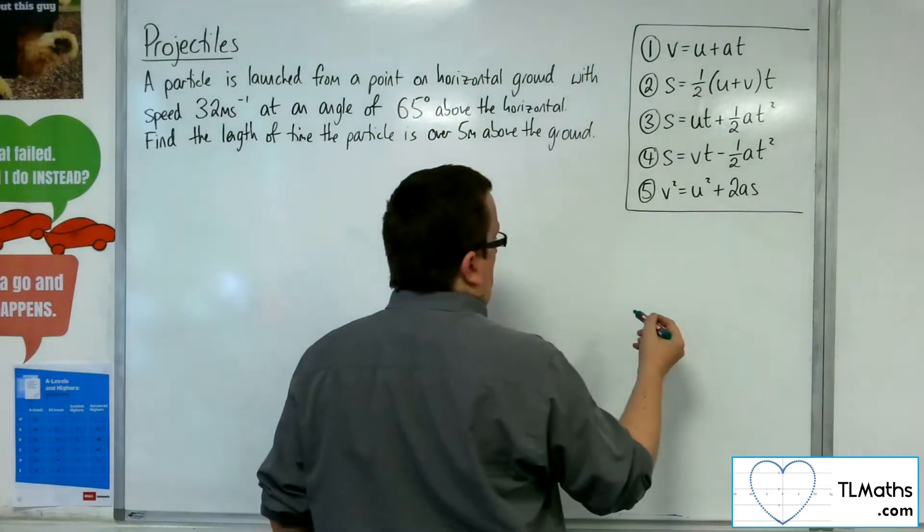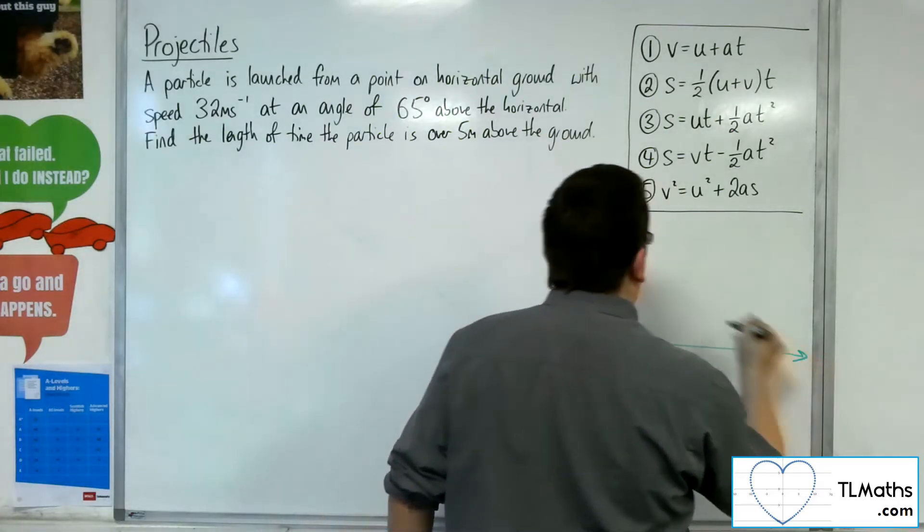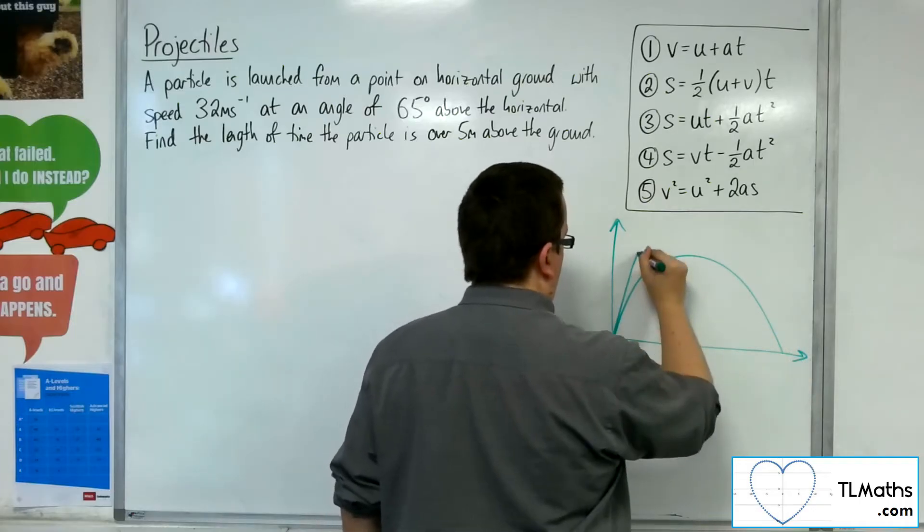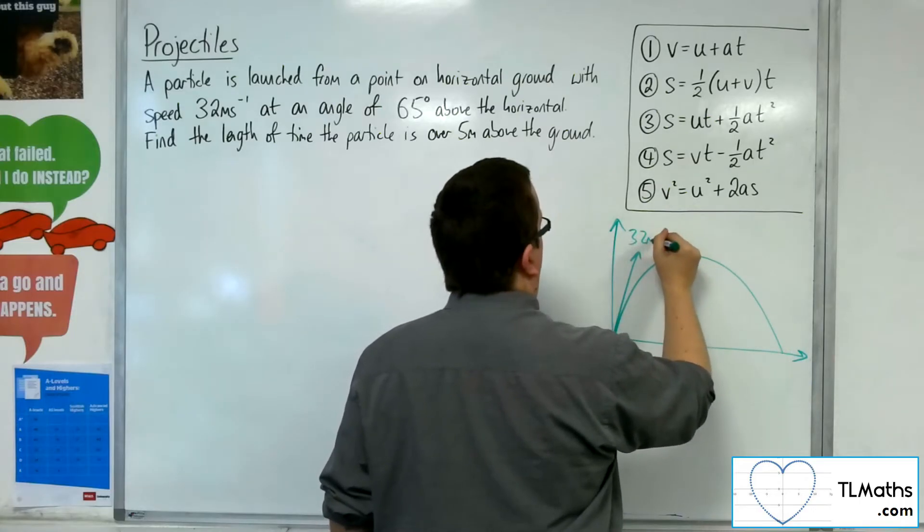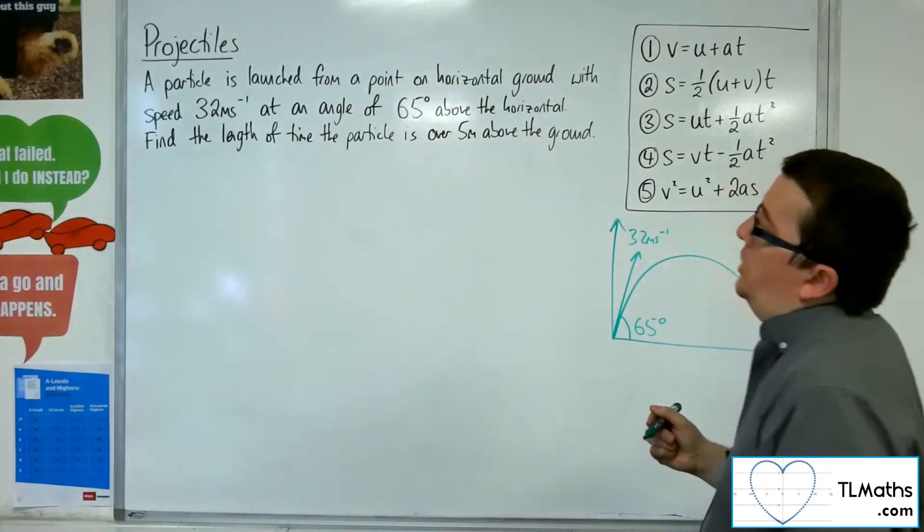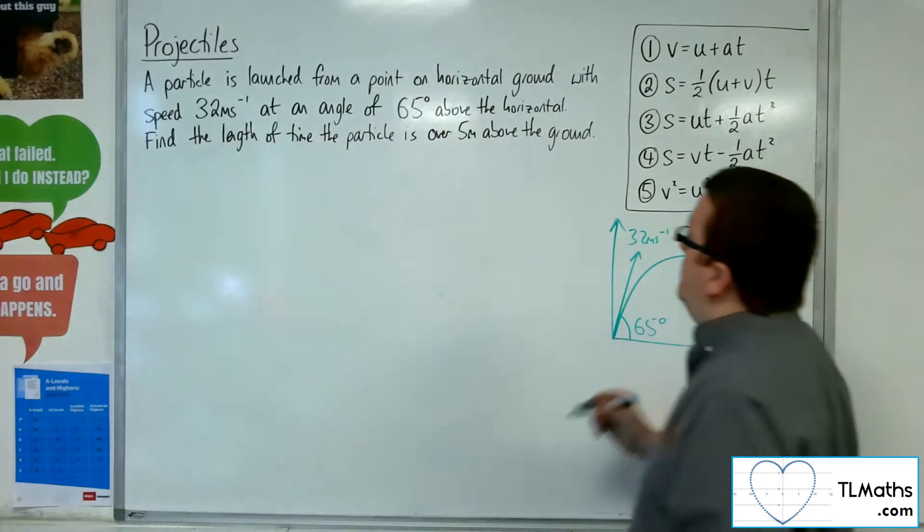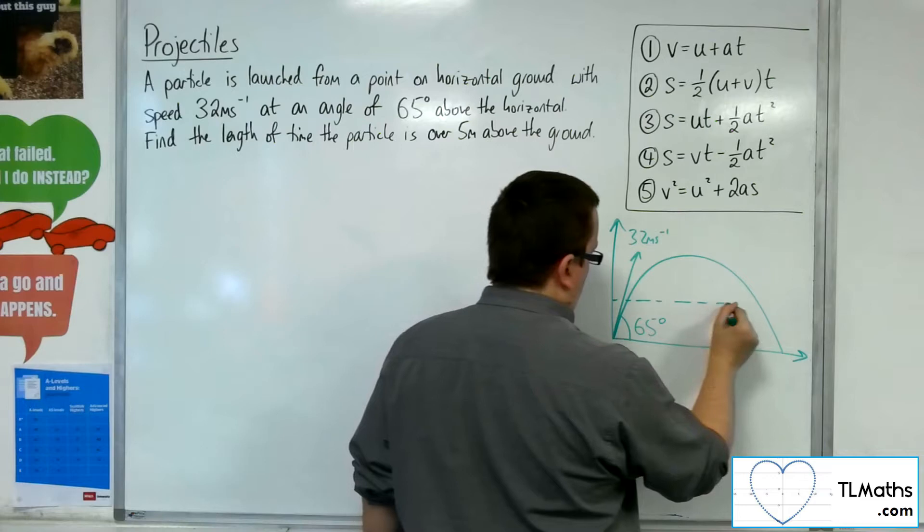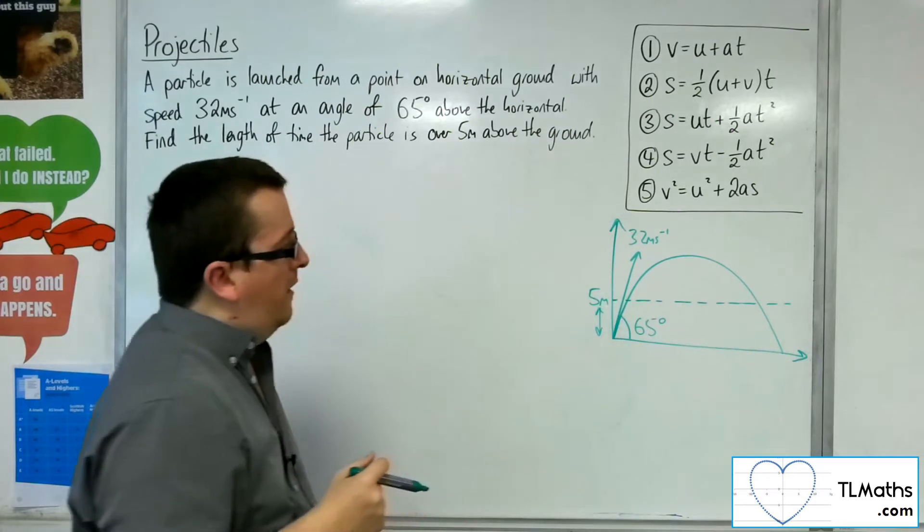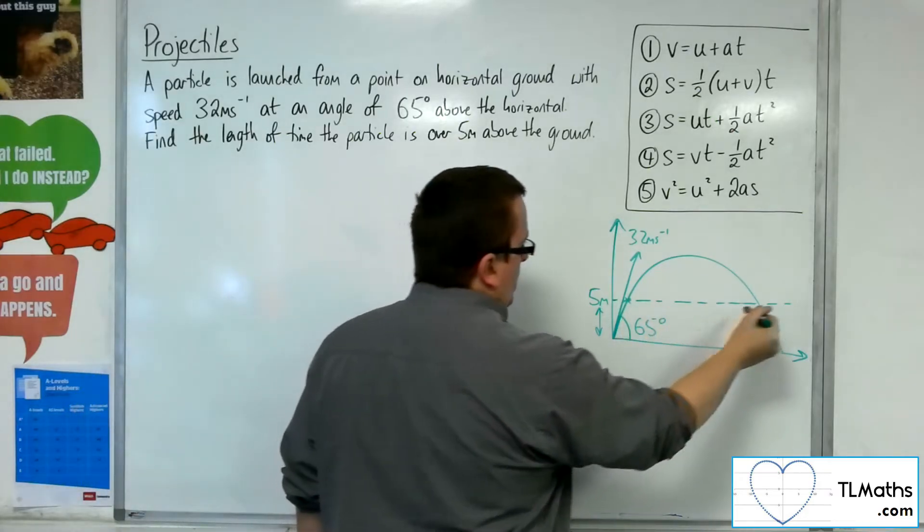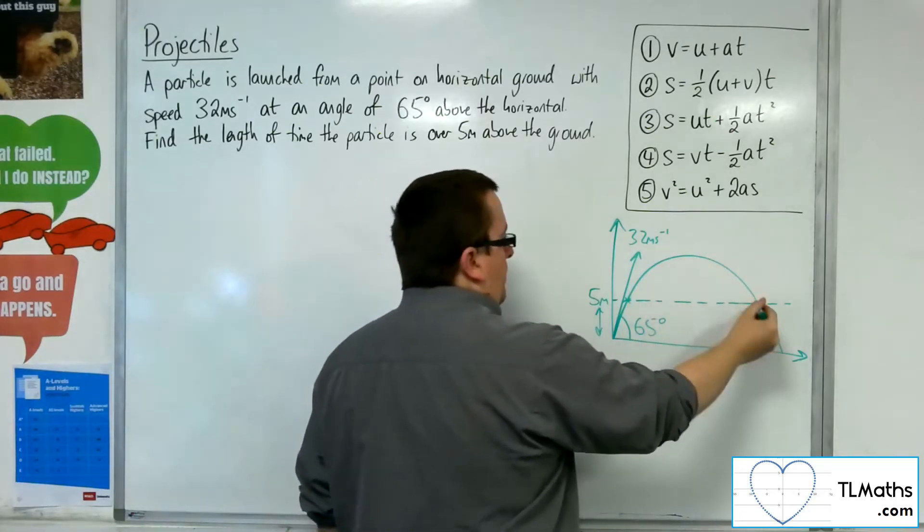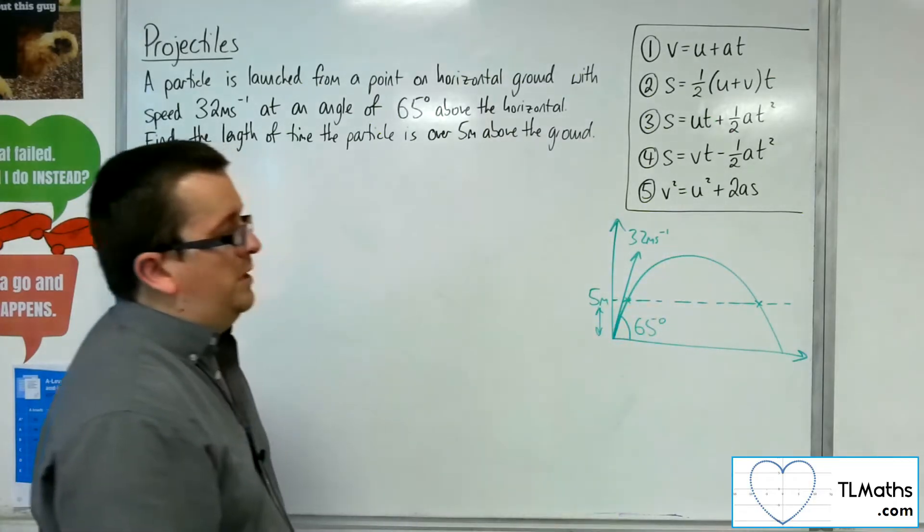Right, so let's visualise that. Okay, so at 32 metres per second at an angle of 65 degrees and we want to find the length of time the particle is over 5 metres above the ground. So there is my 5 metres. So that's 5 metres high and you can see the particle is over that 5 metre mark for that period of time. That's the period of time that I want to find.